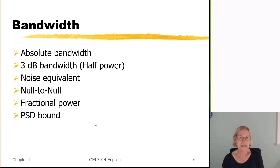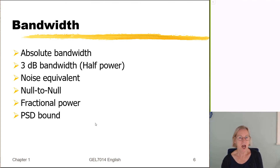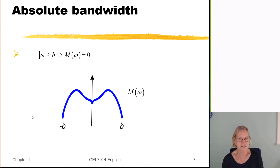Here is a list of bandwidth definitions covered in the Sklar textbook. The first and easiest is the absolute bandwidth — when something is band-limited, the definition is obvious. The 3 dB bandwidth is probably the most commonly heard and is very commonly quoted in component specifications. Noise equivalent bandwidth is often used in analysis. There are also null-to-null, fractional power, and power spectral density bound definitions.